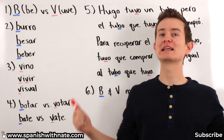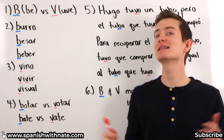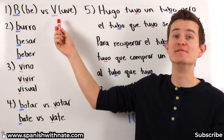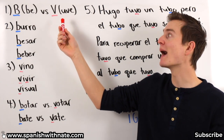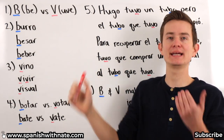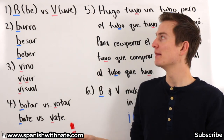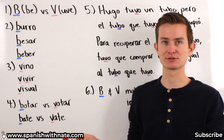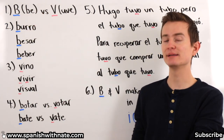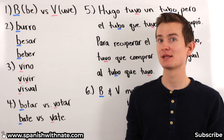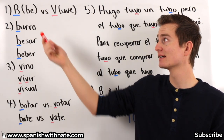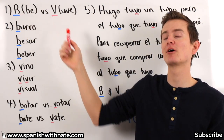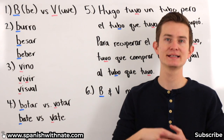A lot of the times I see students making the mistake of pronouncing the V in Spanish as we would in English. In English, B and V make different sounds — B, V. Whereas in Spanish, the sounds that B and V make are exactly the same.